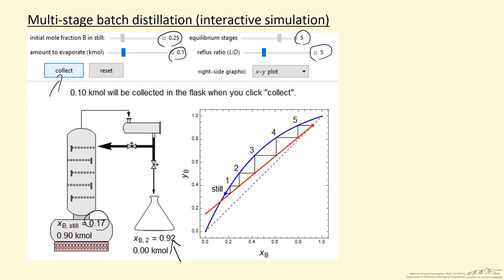So the simulation is set such that when the moles in the still gets to 0.2, the simulation stops, we can't evaporate anymore. So what we're gonna do now is look at the actual simulation and observe how, as we change things, the system changes.